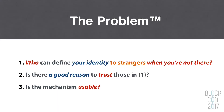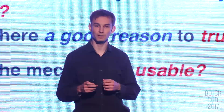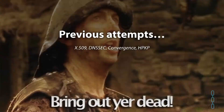So let's clearly define the problem: who can define your identity to complete strangers online when you aren't there in person to identify yourself? If you're an engineer trying to solve this problem, the way they did it before is they came up with this list of certificate authorities that everybody trusts. You have to ask yourself, is there a good reason to trust all of these entities? And is the system usable — is it easy to use for regular users who want to access their favorite games and websites securely?